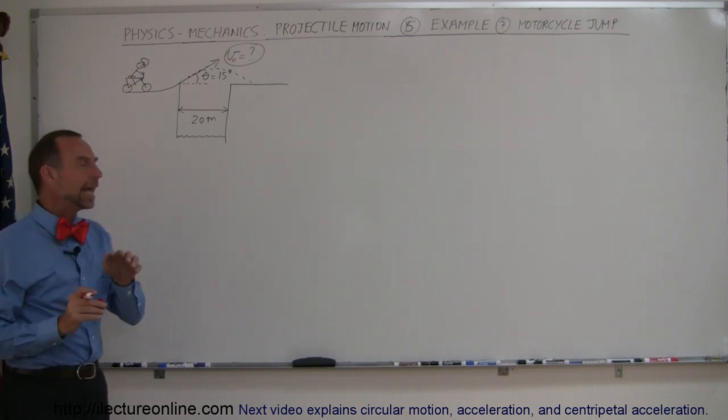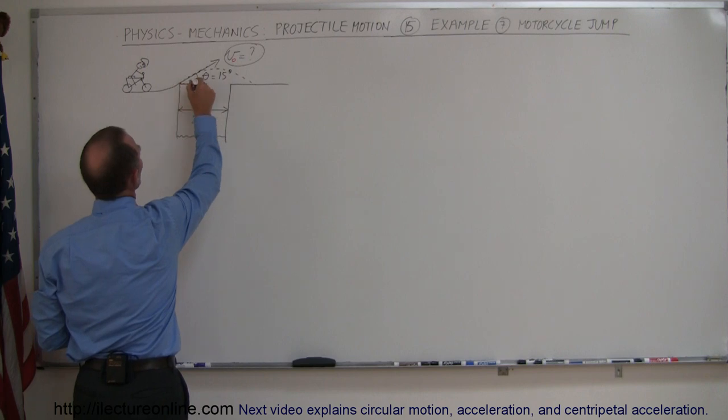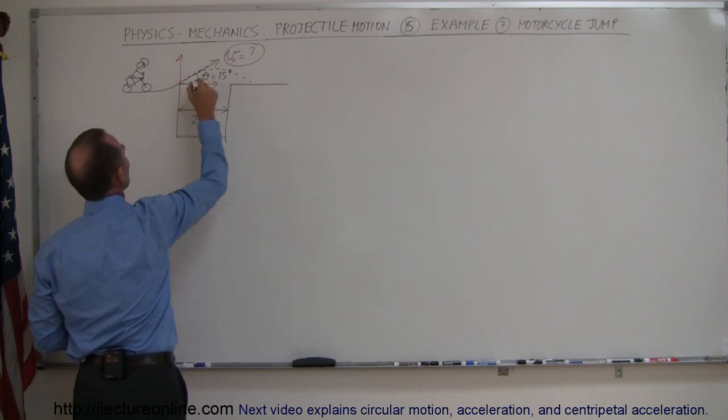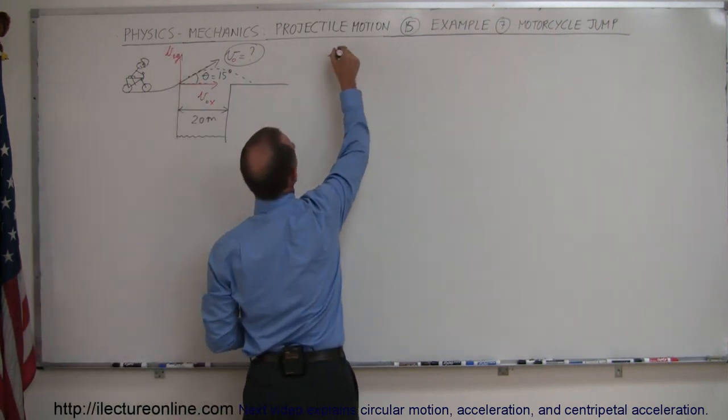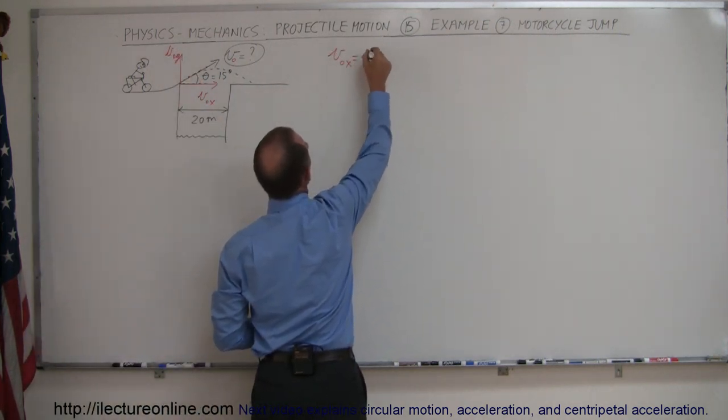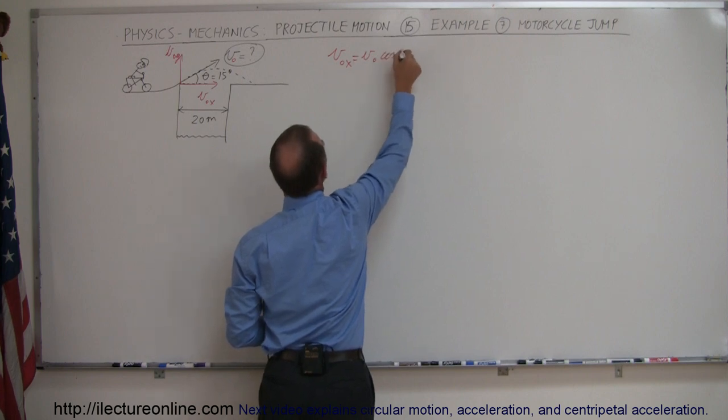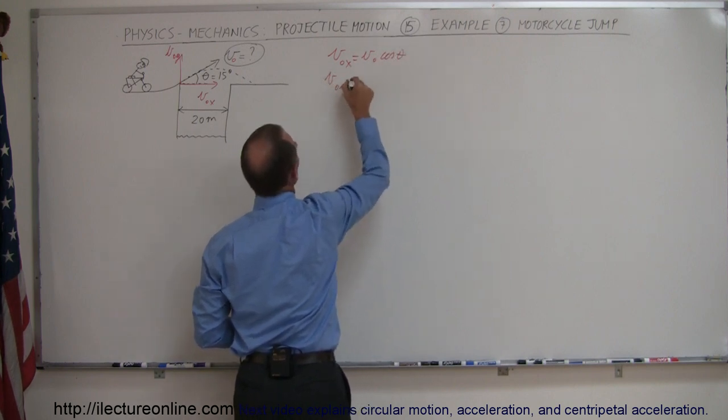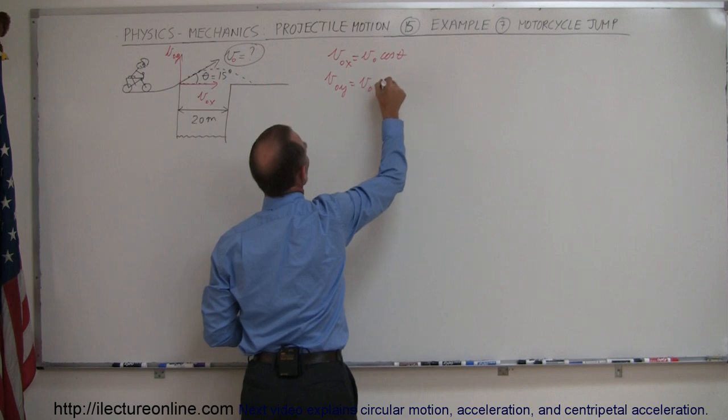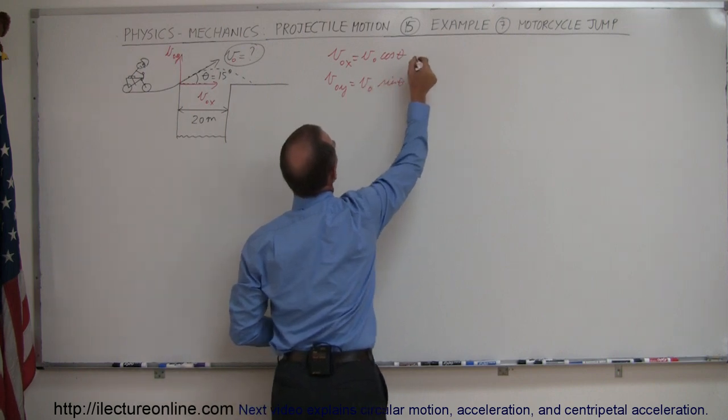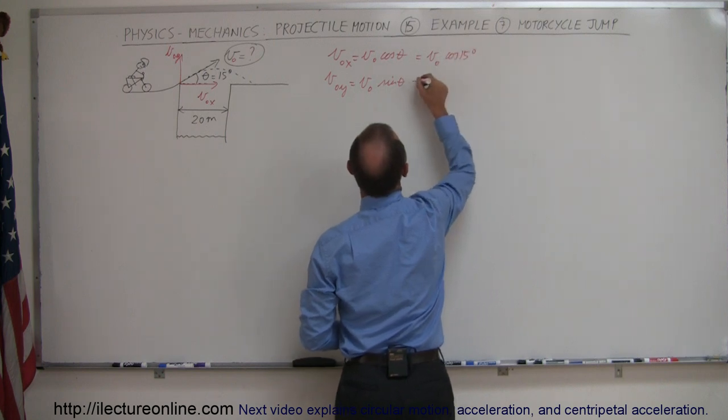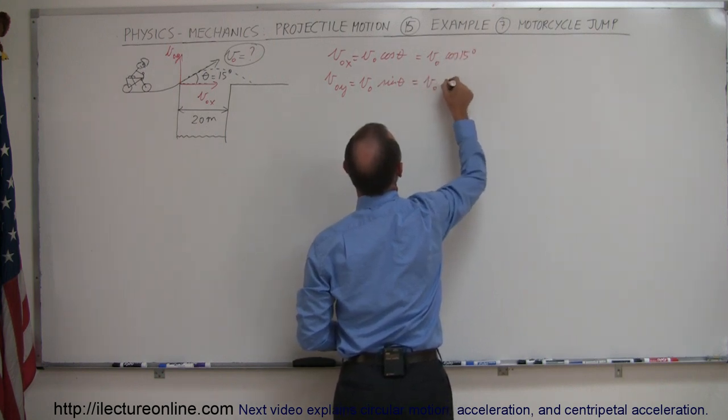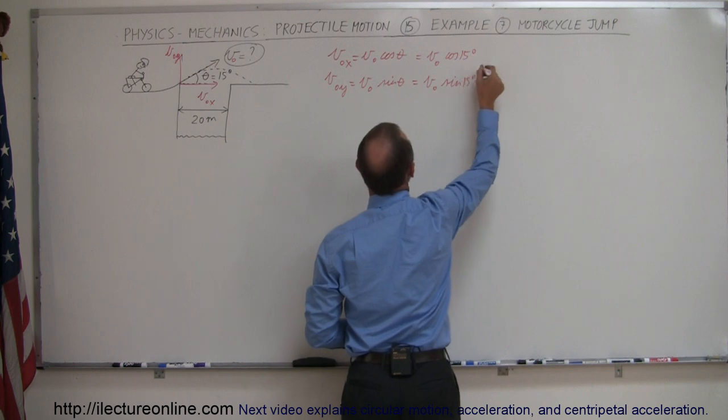So again since he's taking off at an angle we need to find the x and y components of that initial velocity. So we know that v initial in the x direction is equal to v initial times the cosine of theta, v initial in the y direction is equal to v initial times the sine of theta. So in this case that would be equal to v initial times the cosine of 15 degrees and that would be v initial times the sine of 15 degrees.